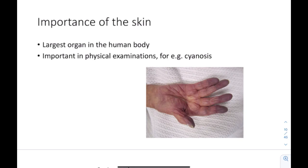The skin is very important in physical exams because there are many findings that can give us clues about disease. For example, cyanosis is a blue discoloration you can see in the skin, and it can be indicative of many diseases like respiratory disease or congenital heart disease. There are many other skin findings like this. You just need to know that the skin is very important in physical examinations.